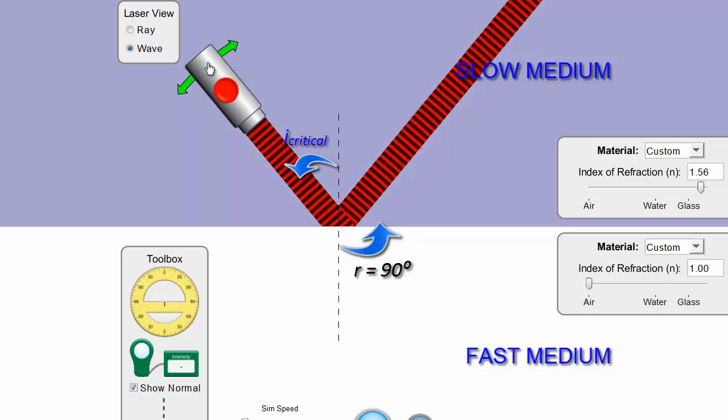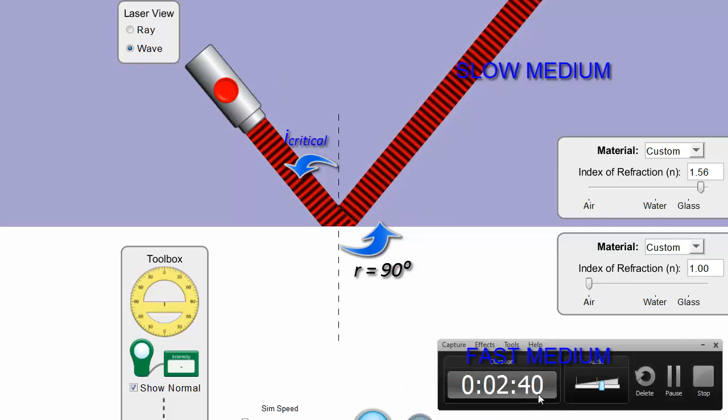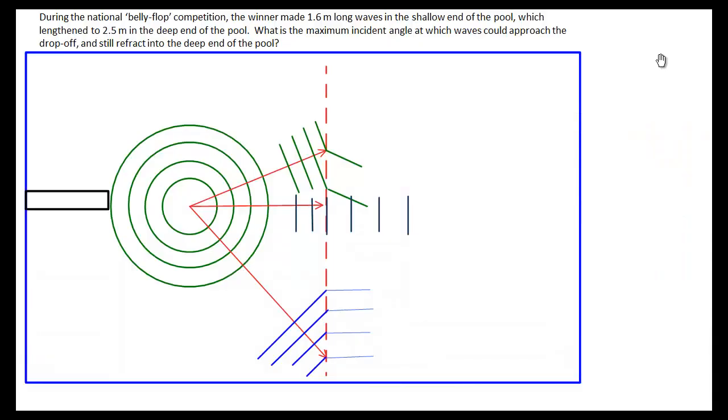And it turns out that's the secret to solving these critical angle questions. What we do is set r, the angle of refraction, equal to 90 degrees. And then we use our regular equations and solve. Let's see how that looks first. Let's start by writing down our given information. It says the National Belly Flop Competition, the winner made 1.6 meter long waves in the shallow end. So down here, I've drawn my pool, and we see a diving board on the left. Imagine he jumps and splashes right in the middle where my hand is, and these waves ripple off. The distance from crest to crest is roughly 1.6 meters in the diagram. And then you've got your deep and your shallow end represented by this dotted line over here.